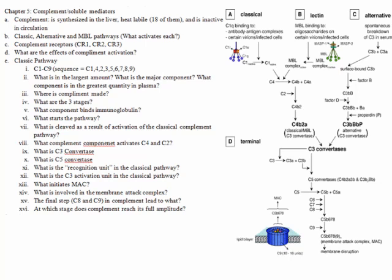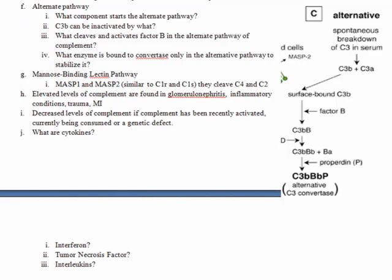The complement component found in the largest amount is C3 — that's a great test question. Elevated levels are found in glomerulonephritis, inflammatory conditions, trauma, and myocardial infarct. Decreased levels occur if complement has recently been activated and is being consumed, or if there's a genetic defect. Cytokines are chemical messengers; interferon kills virally infected cells; tumor necrosis factor plays a large role in killing gram-negative bacteria; and interleukins are the communicators between WBCs.